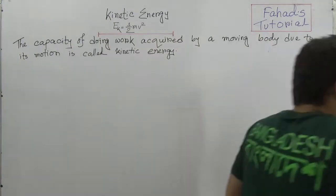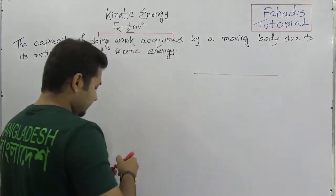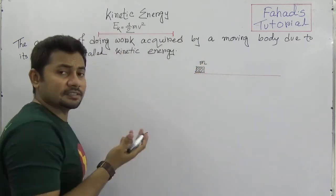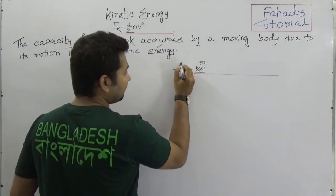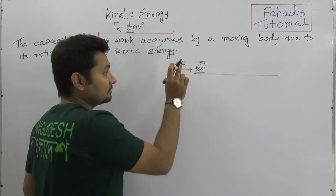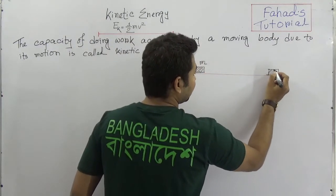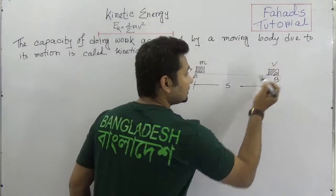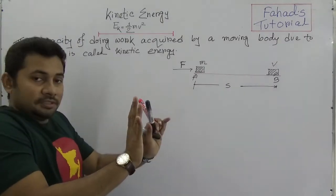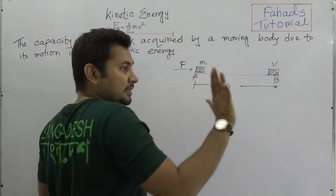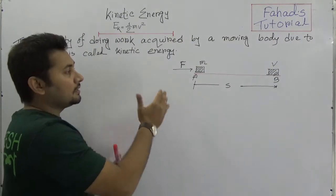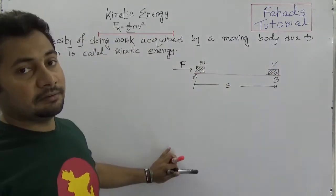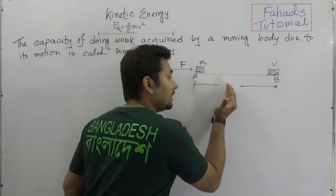Now let's think about this carefully. Suppose there is a body of mass M at rest — if it is at rest there is no kinetic energy. But if a force is applied to this body, it moves from point A to point B, covering a displacement of S. It then acquires a final velocity V. So F amount of force is pushed to the body and it acquires velocity V after crossing displacement S.